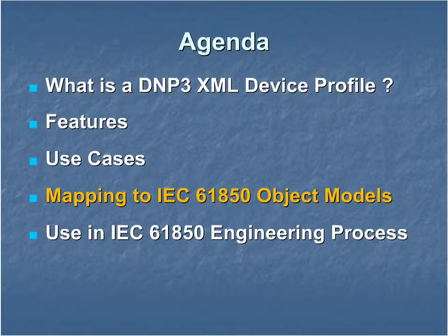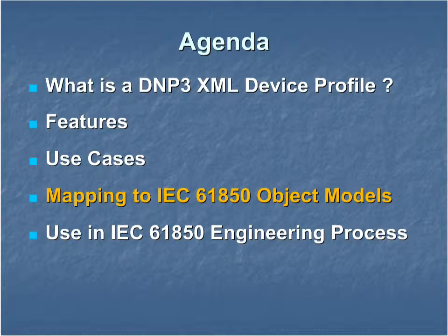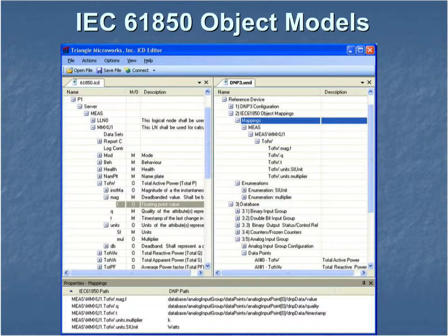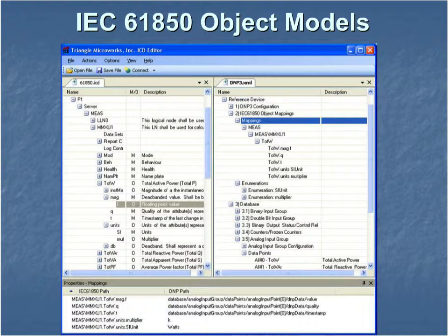The XML device profile can be used when mapping DNP3 to IEC 61850 object models. Standard models allow a consistent database interface in a multi-vendor product. The device profile will include fields for mapping DNP3 point values, flags, and timestamps to IEC 61850 data attributes.